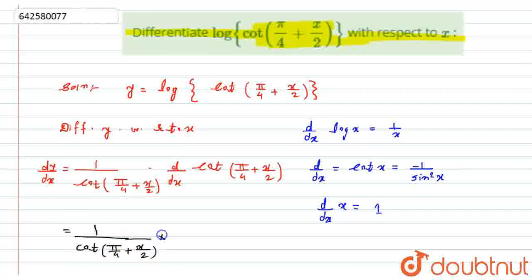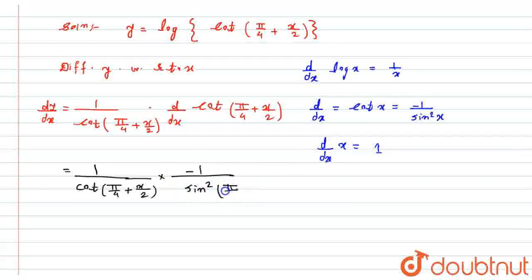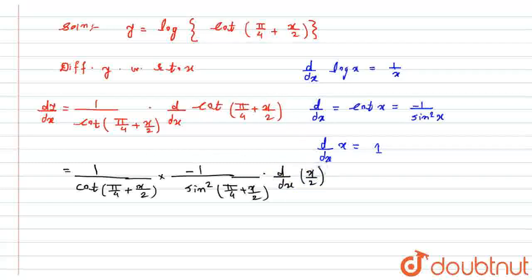Now, the derivative of cot(x), as per the formula, it will become minus 1 divided by sin²(π/4 + x/2), into d/dx of (x/2), according to the chain rule.